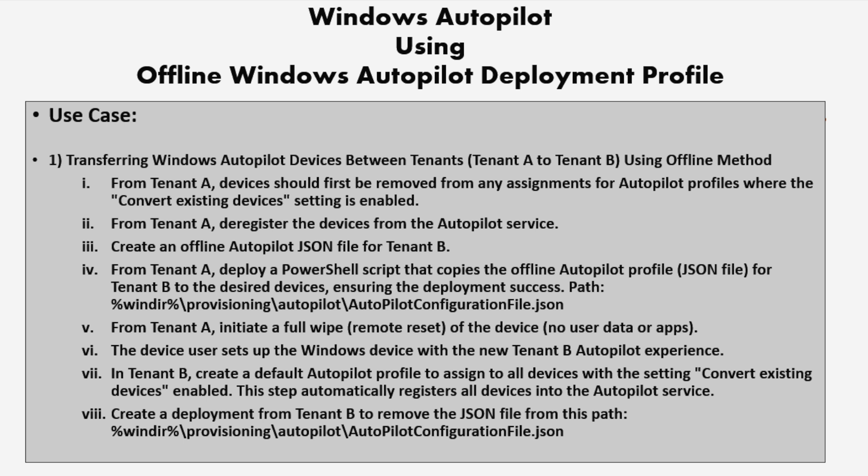And last, we have to create a deployment from tenant B to remove the JSON file from the path, so that we can ensure that next time when the machine is performing Autopilot, it is downloading the deployment profile from the Windows Autopilot deployment service. In today's video, I will be demonstrating how to export the JSON file using PowerShell commands and guide you on where to save the JSON file to execute the offline Autopilot.